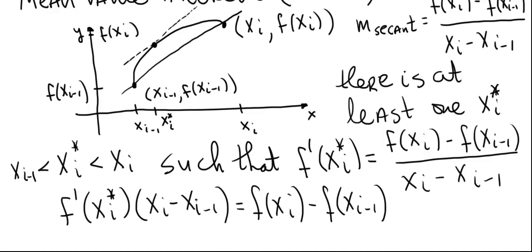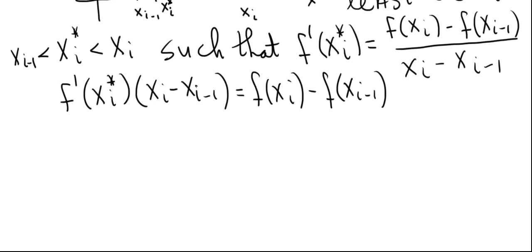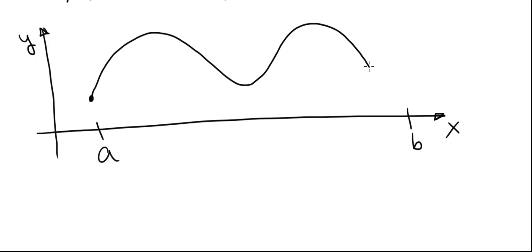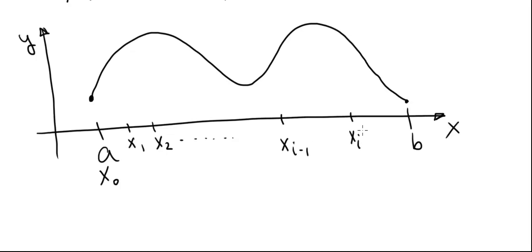Let's now go to the derivation of the arc length formula. Here is the graph of our function over the interval a to b. Let's subdivide the interval from a to b into n subintervals. We'll call a as x sub 0, then x1, x2, and so on. Let's call one endpoint xi minus 1 and the next x sub i, continuing up to xn minus 1, with b equal to xn.